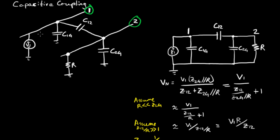Wire 1 is biased with a voltage source V1, an AC voltage source. There's a capacitance between wire 1 and ground, C sub 1G. There's a coupling capacitance between wire 1 and wire 2, C sub 12.